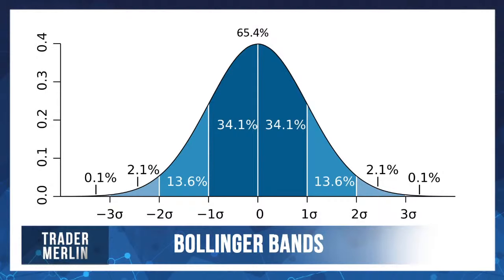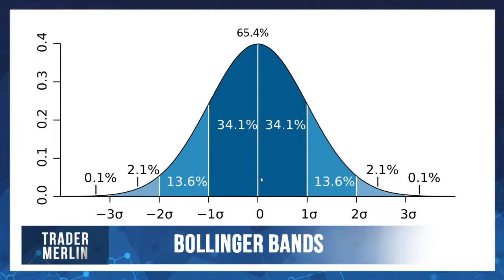Within those two goalposts: 68% of data falls within one standard deviation, and 95% within two standard deviations. I'd rather use two standard deviations because 68% isn't good enough for me. The 20-period moving average is the zero line - the mean. At two standard deviations, 95.4% of all data should be within those Bollinger Bands, meaning less than 5% of data should be outside them.